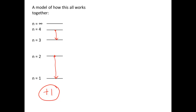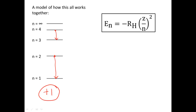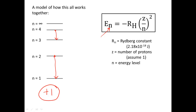Each of these energy levels has a specific energy that the electron possesses in order to be in that energy level. The equation to calculate this energy is given here, where the energy of an electron in level n is equal to negative RH — the Rydberg constant — times the quantity Z over n squared, where Z is the number of protons and n is your energy level. For the purposes of this class, we're only going to be talking about hydrogen atoms, so Z is equal to 1, since all hydrogen atoms have 1 proton.